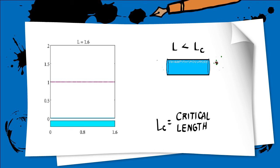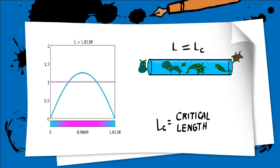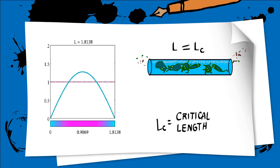If L is exactly the critical length, then the rate of plankton leaving the tube and the plankton reproduction will be the same. So the population will converge to a non-trivial steady state where the plankton concentration is zero at the ends and reaches a maximum in the middle.